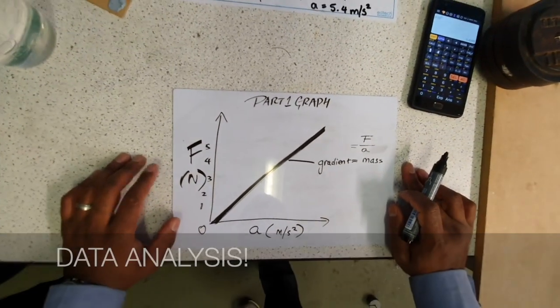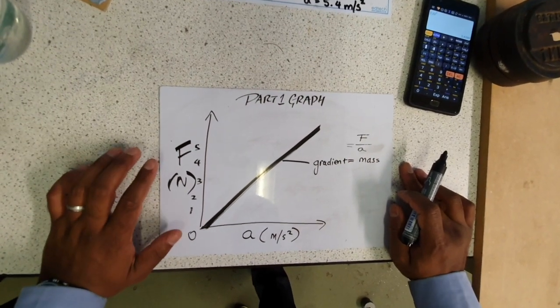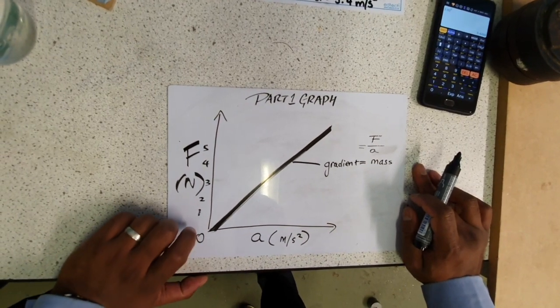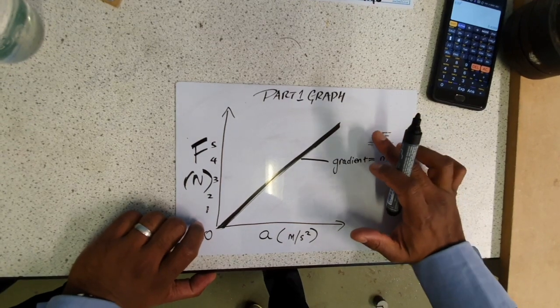Our analysis of this required practical is to produce a graph where our y-axis is the force and our x-axis is our acceleration. We're going to plot our points and we should get a straight line graph.